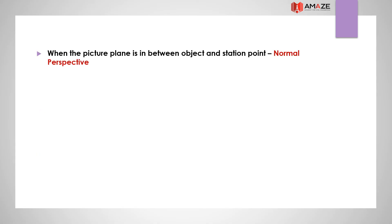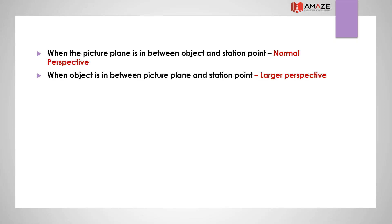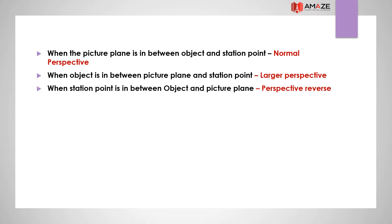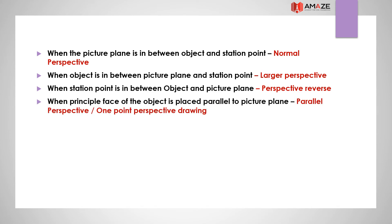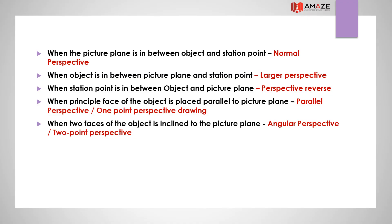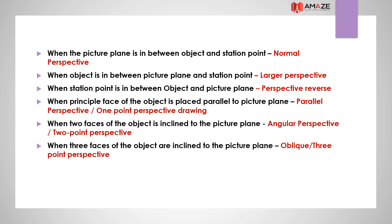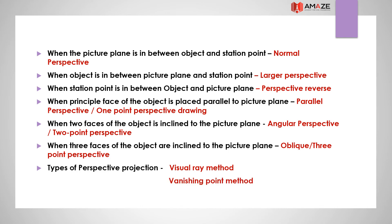When the picture plane is between the object and the station point, it is a normal perspective. When the principal face of the object is placed parallel to the picture plane, it is a parallel perspective or one-point perspective. When two faces of the object are inclined to the picture plane, it is an angular perspective or two-point perspective. When three faces of the object are inclined to the picture plane, it is oblique or three-point perspective. Types of perspective projection methods are the visual ray method and the vanishing point method.